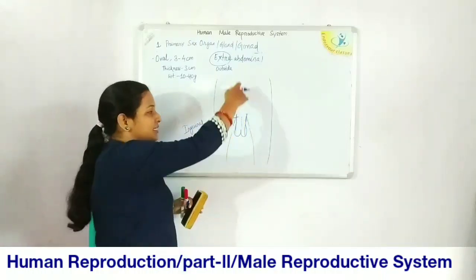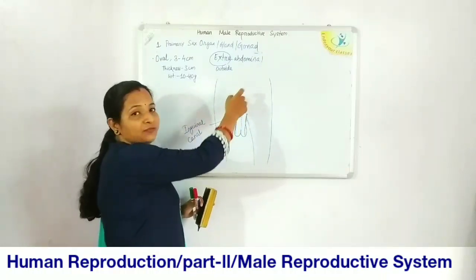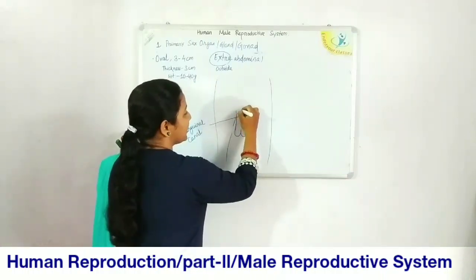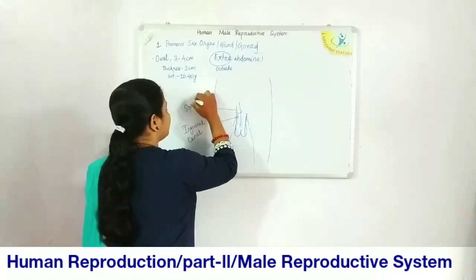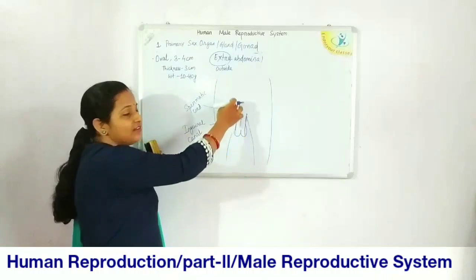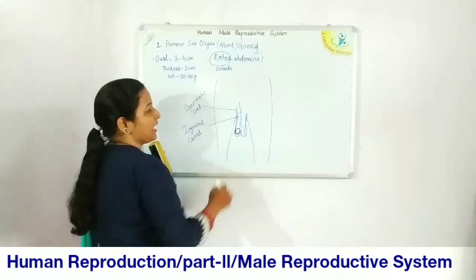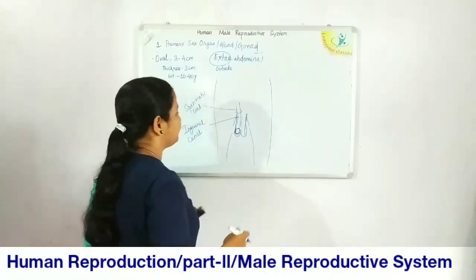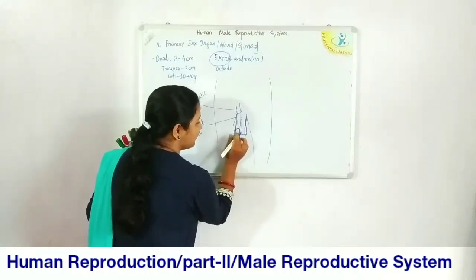As the testes descend outside, they also bring along the nerves, arteries, and veins supplied to them. This forms a band-like structure called the spermatic cord, which comprises the artery, vein, and nerves supplied to the testes, and helps hold the testes inside the scrotal sac in position.